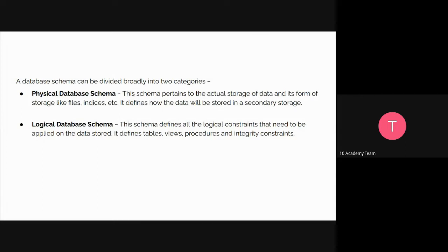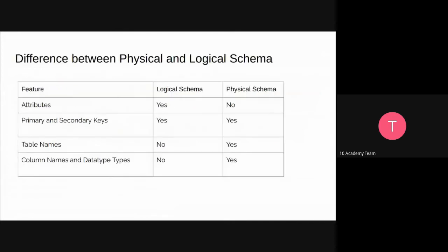In the logical database schema, it defines the logic constraints applied on the data — it defines the tables, procedures, views, and integrity constraints, and describes the database design at a logical level. The third type is the view schema, which defines the design of the database at a view level. The difference is that in logical schema we have different types of attributes, whereas in physical schema we're concerned about the tabular names, structure, column names, and data types — the physical level. In logical schema, we're mostly concerned about attributes and relationships like primary and secondary keys.